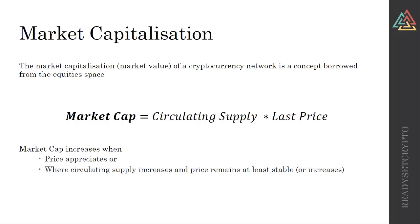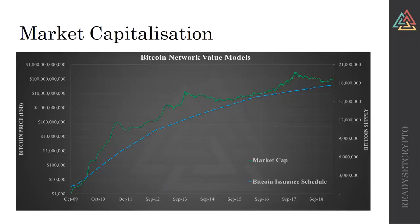Market cap does assume all coins are in existence, and it is a concept borrowed from the equity space — from stocks and shares. Looking at the market cap in green, we can see a general trend of increase that follows the Bitcoin issuance schedule. You can see the volatility, and it's worth noting that pre-2013 the data is fairly sparse, but since 2013 we have a lot more data from the guys at Coinmetrics.